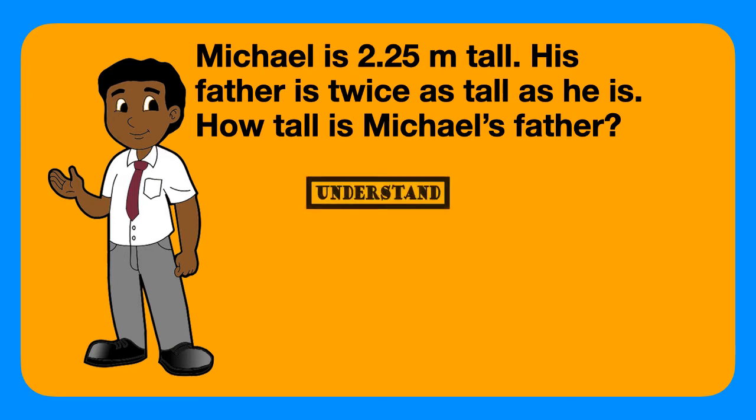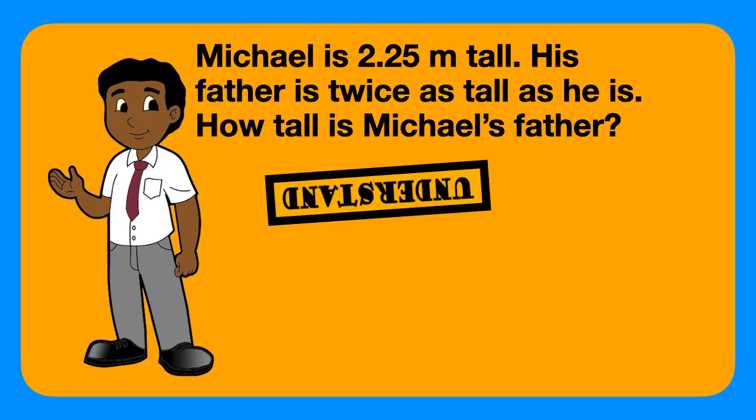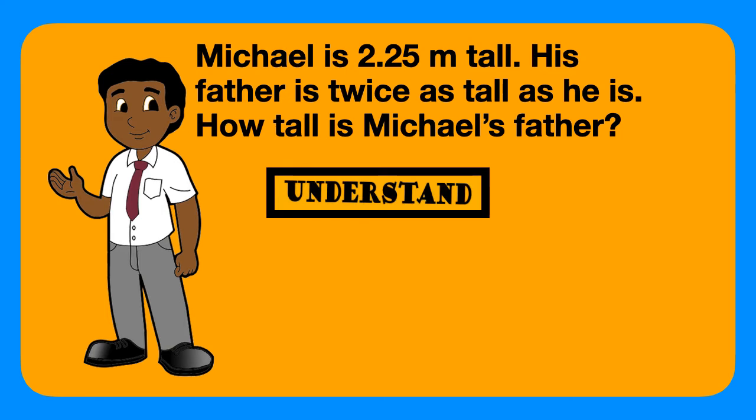First, we must understand the problem. In understanding the problem, we must circle what we know. We know that Michael is 2 and 25 hundredths meters tall. And we know that his father is twice as tall as he is. In understanding, we must also underline the question. The question here is, how tall is Michael's father?